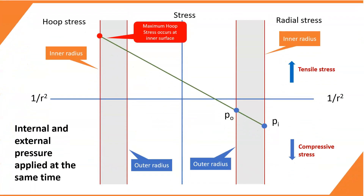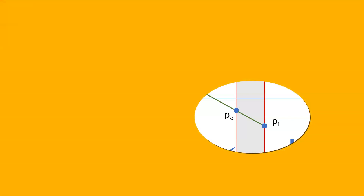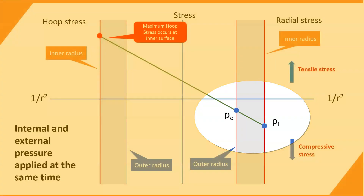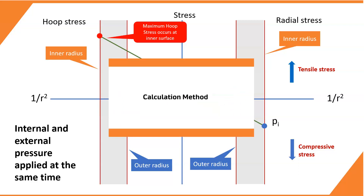This shows a plot of stresses when the cylinder is subjected to both internal and external pressures. The maximum hoop stress value depends on the values of internal pressure and external pressure. In this situation, the hoop stress is tensile because the internal pressure is more than the external pressure.